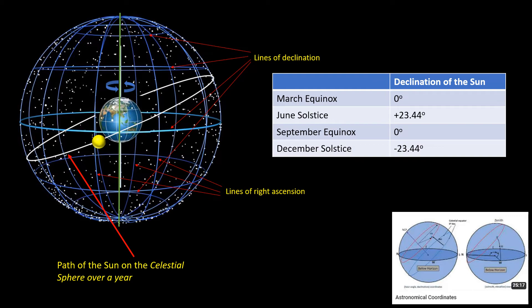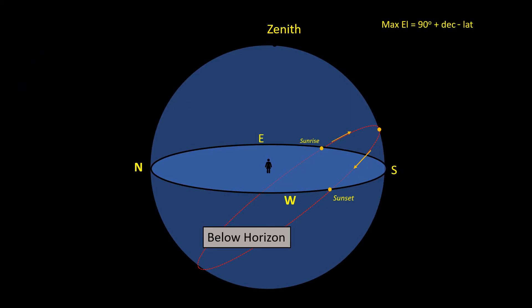If you want to know more about right ascension and declination, then I suggest you watch my interesting video on astronomical coordinates. So as we've just seen, at the December solstice, the declination of the sun is minus 23.44 degrees. This means that the formula for the maximum elevation at the solstice is 66.56 degrees minus the latitude.